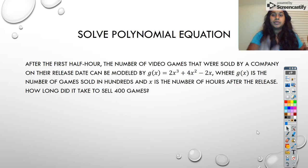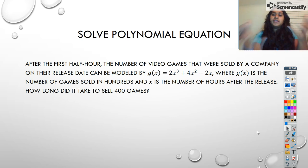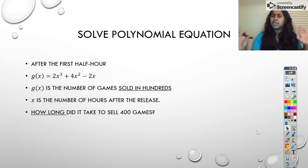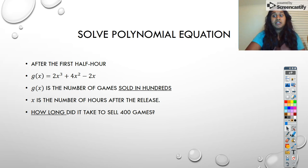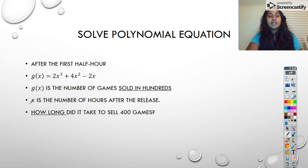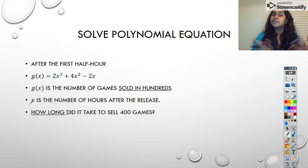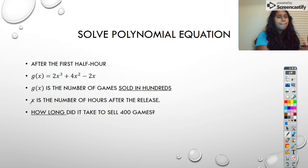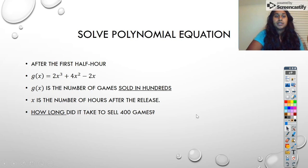Now we're going to talk about how this works with a real world situation. We have this video game model — pause and take a moment to read it. The real point of a word problem is to pull out all the appropriate information. So I went ahead and did that — just look at the important information. I have an equation right here that tells me what we're going to be using, so I don't have to create an equation. What's important is that our number of games is sold in hundreds, where x is the number of hours after release. We're looking for how long it took to sell 400 games — that's time, which is my x value. Since it's sold in hundreds, 400 games would simply be four, so I set G(x) equal to four.